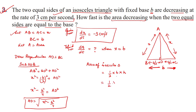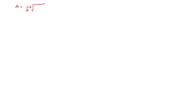The area of the isosceles triangle is A = (1/2) × base × height = (b/2) × √(x² − b²/4). Now we differentiate with respect to time t. Since b is constant, we apply the chain rule, multiplying by dx and dividing by dx, so dA/dt = (b/2) · d/dt[√(x² − b²/4)].